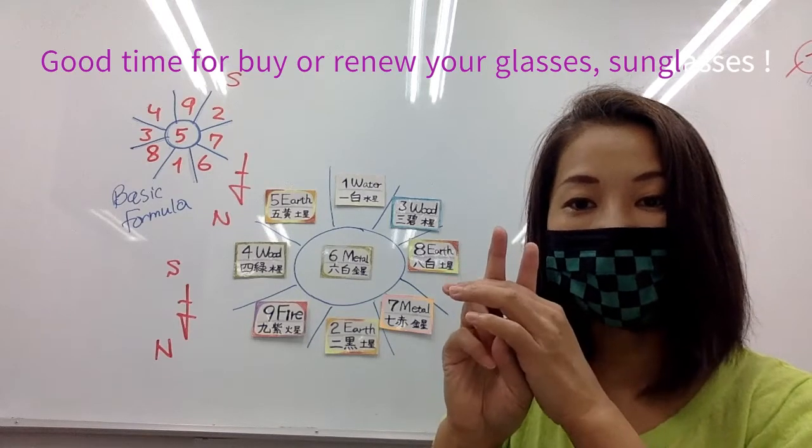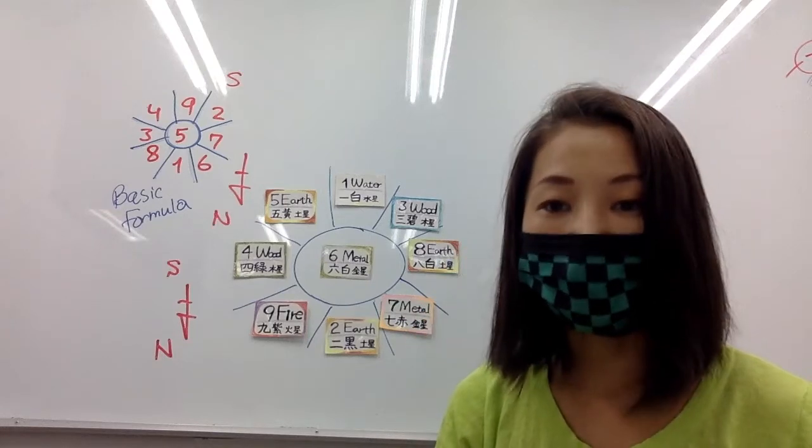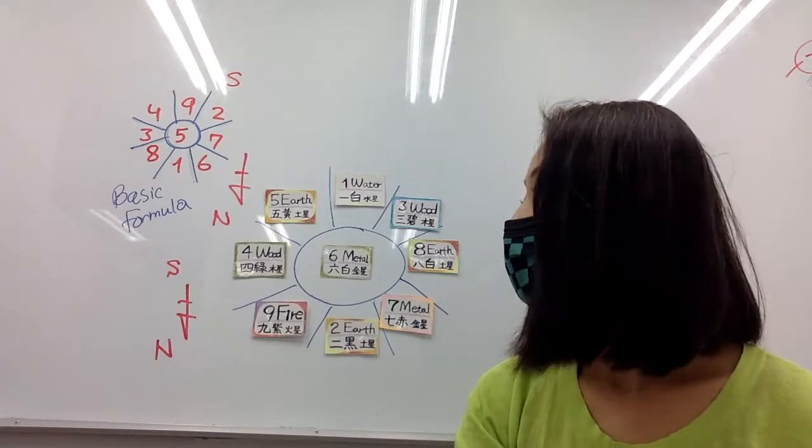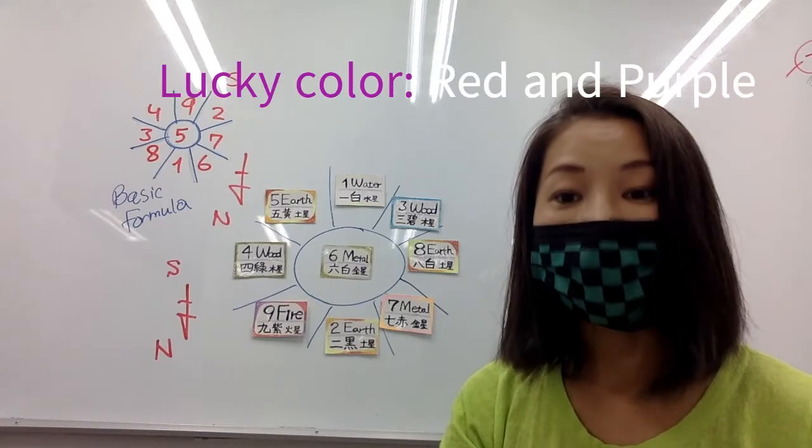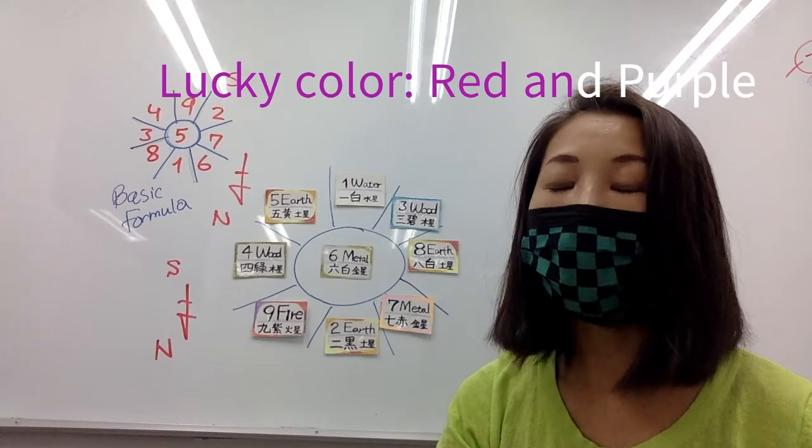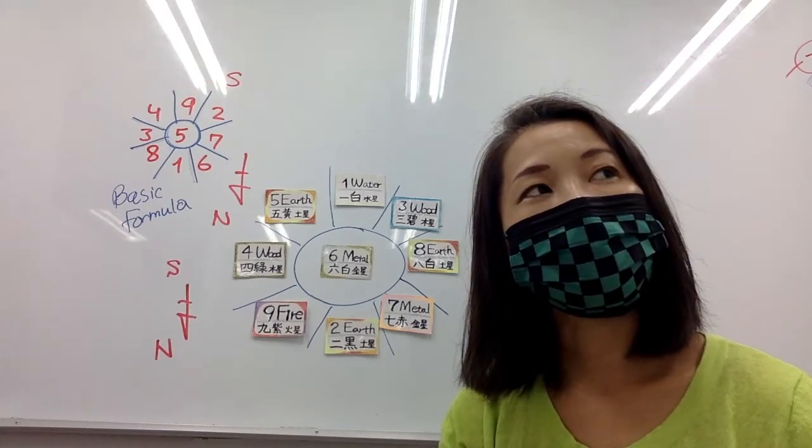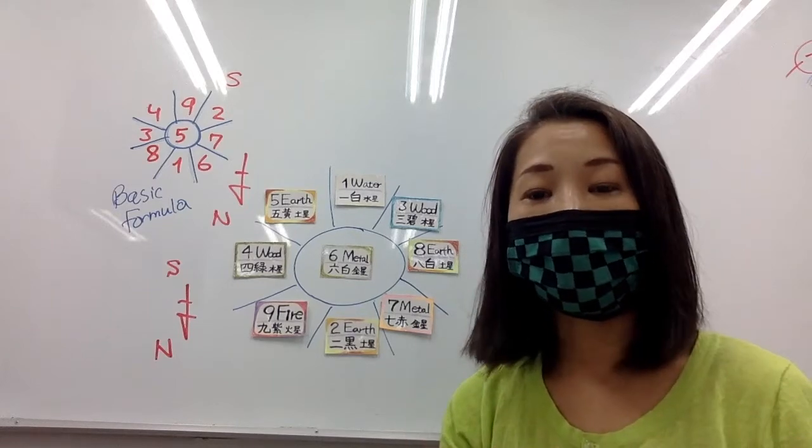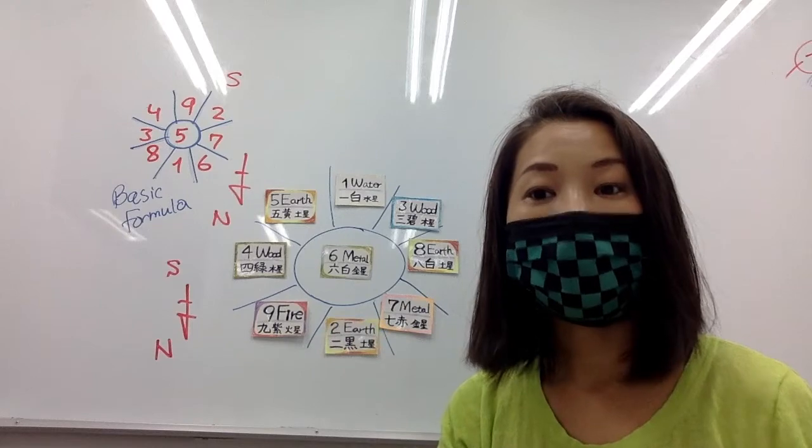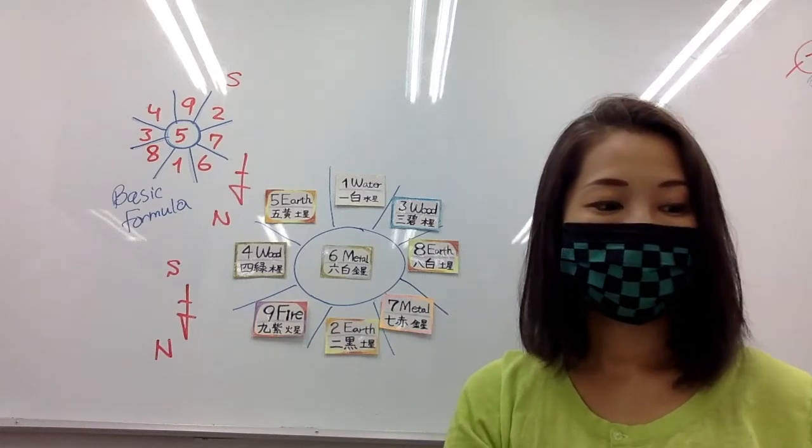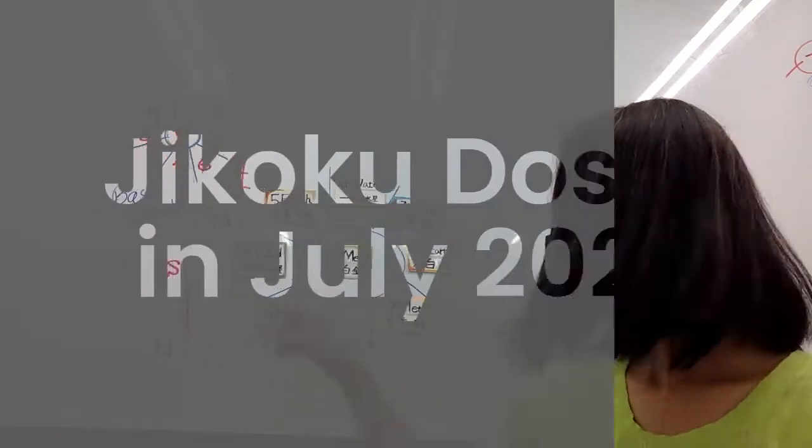The second is eyes. And third, your lucky color. In July, your lucky color is red and purple, or some very shiny or beautiful things. Whatever. That's Ipaku.